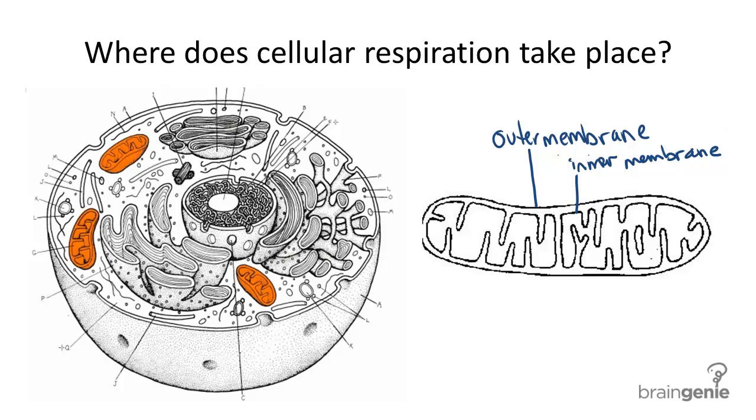The inner membrane has many folds as you can see here. These folds are called cristae. This membrane provides a large surface area inside the mitochondrion for turning the bonds in glucose molecules into energy.